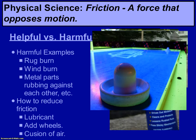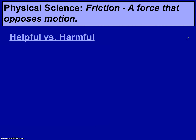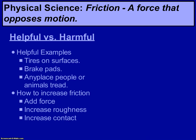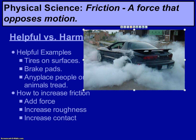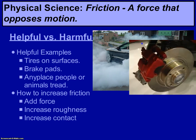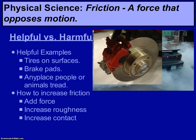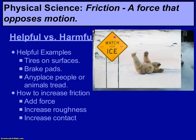Now let's move on to the helpful examples of friction. Tires on surfaces — if you did not have friction between the road and the tires of the car, there is no way that car would move. Brake pads are very helpful on cars; if you didn't have friction between the metal parts and the brake pads, there is no easy way to stop a car. Another good example is basically any place humans or animals walk.